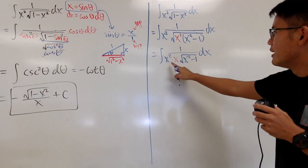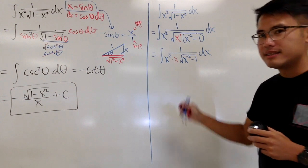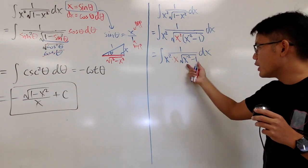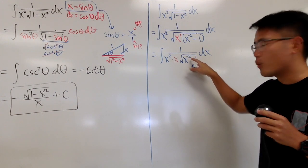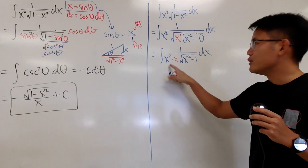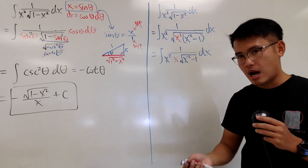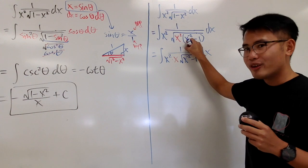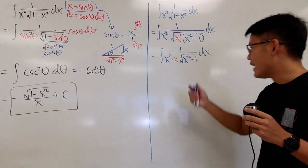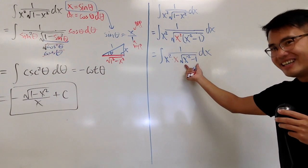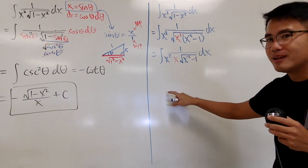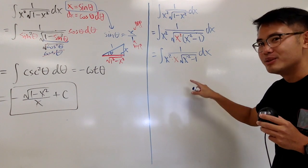So x squared times x equals x cubed in the denominator. Bringing it to the numerator gives x to the negative 3 power. Notice that if we let u equal x to the negative 2 minus 1, then du equals negative 2 x to the negative 3 dx. So x to the negative 3 is right there — now you can see where we're going!